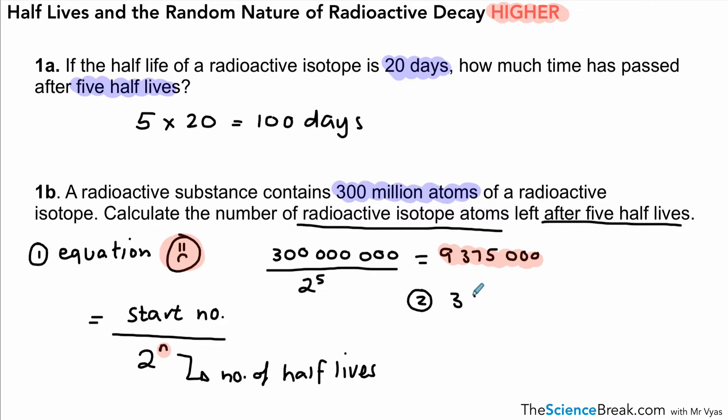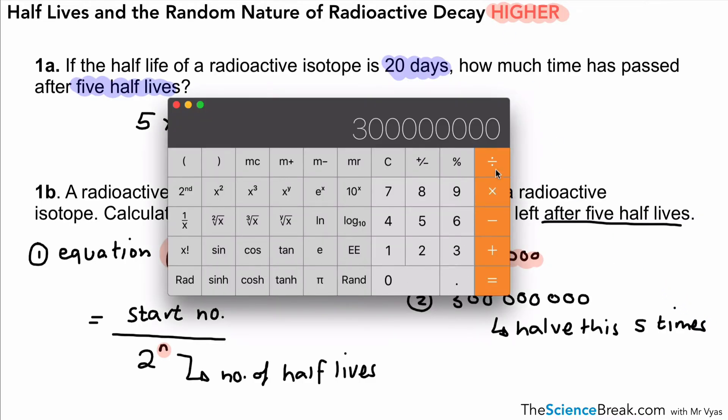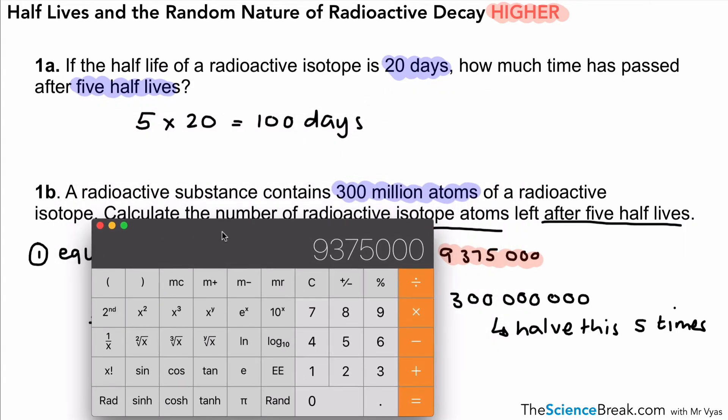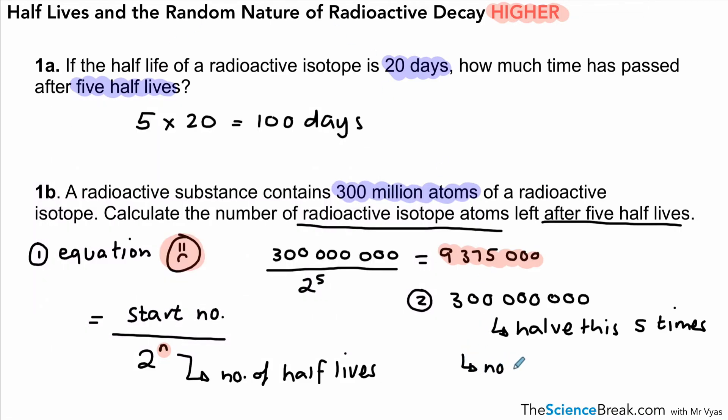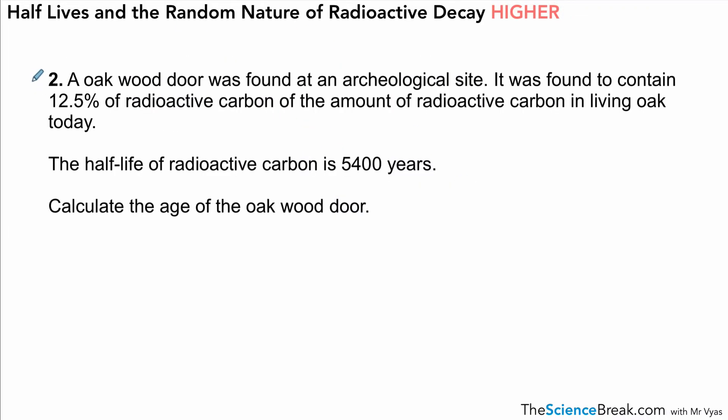There is a second way and I think this is a bit more intuitive. What we would do is take our 300 million and half it five times—half that value five times and that would give us the same answer. The way we do this on our calculator is put in our 300 million, divide by 2, and just press equals five times: one, two, three, four, five. There we go, we've got the same answer in a slightly more simple way without having to remember an equation. So I would recommend the second way, but obviously if you want to use the other way you can.